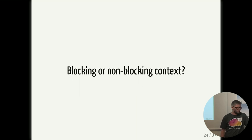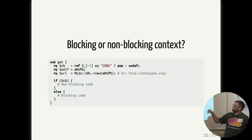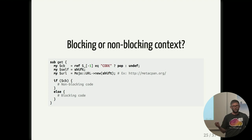So how do you know if you're in a blocking or non-blocking context? The way you do it is to check if the last argument is a code ref. If you have a callback, you run the blocking version of the code. If you don't have a callback, you run the non-blocking version.